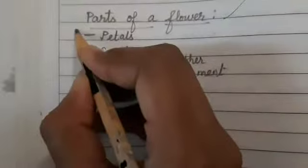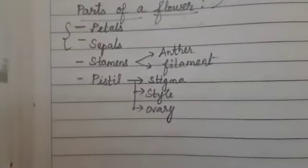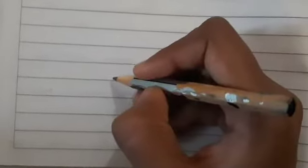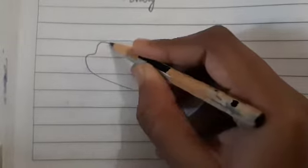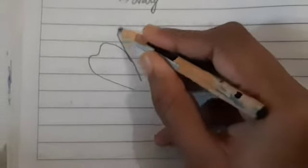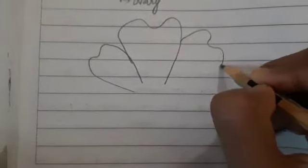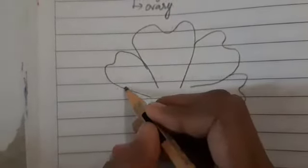First we will draw the petals and sepals alone. The petals can be of any shape, because all flowers will not have the same shape or size. I am imagining a hibiscus plant and drawing the petals — it can be of any shape. So these are all the petals.